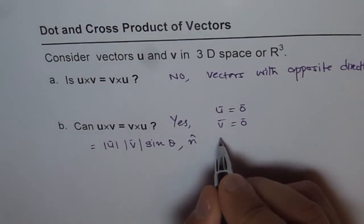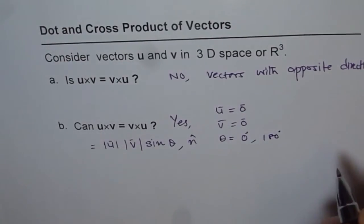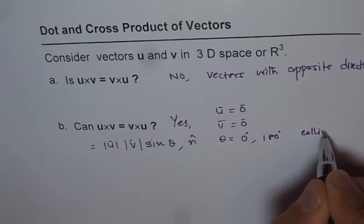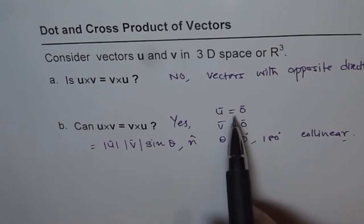That is, when theta equals to 0 degrees or it could be 180 degrees. In both cases, that means collinear. So if the vectors are collinear or 0, then their cross product is same.